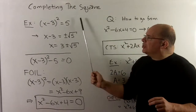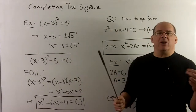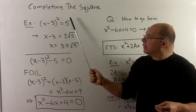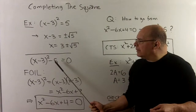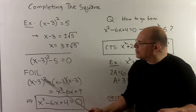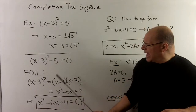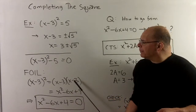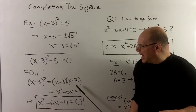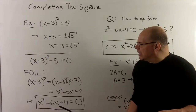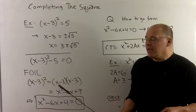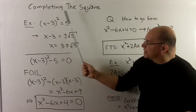Now going into our equation, let's expand everything out and see what type of problem we're really trying to solve here. Moving the 5 to the other side, we expand x minus 3 squared using FOIL: x minus 3 times x minus 3 gives x squared minus 6x plus 9. Then minus 5 gives us x squared minus 6x plus 4 equal to 0. So this is the equation we're really solving here.